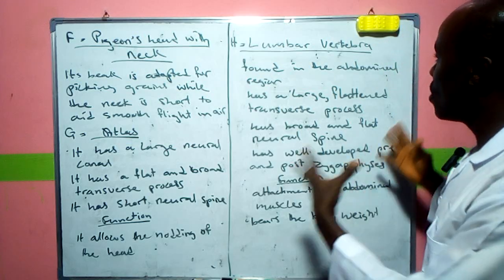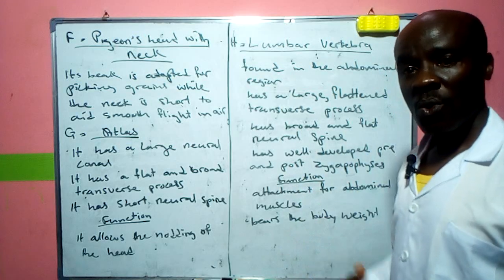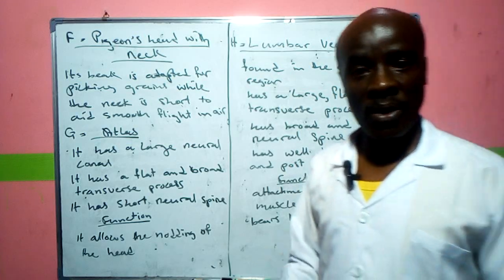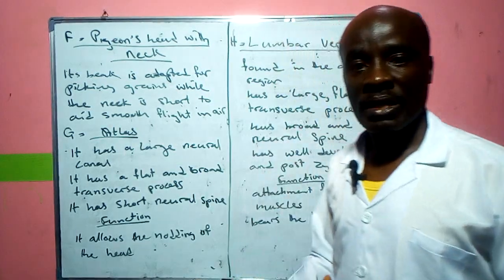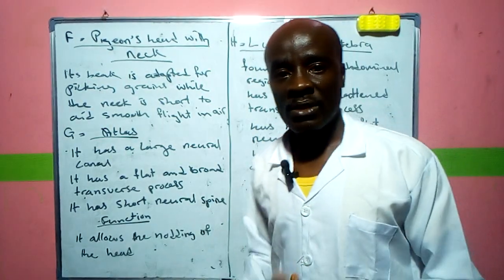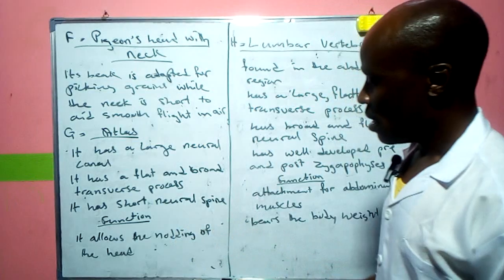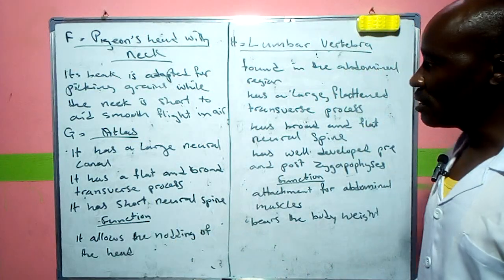Similarities between the atlas and lumbar vertebra include: both have a neural spine, a neural canal, and a neural arch. Go back to your books and look for additional differences and similarities to add to what has been discussed today.